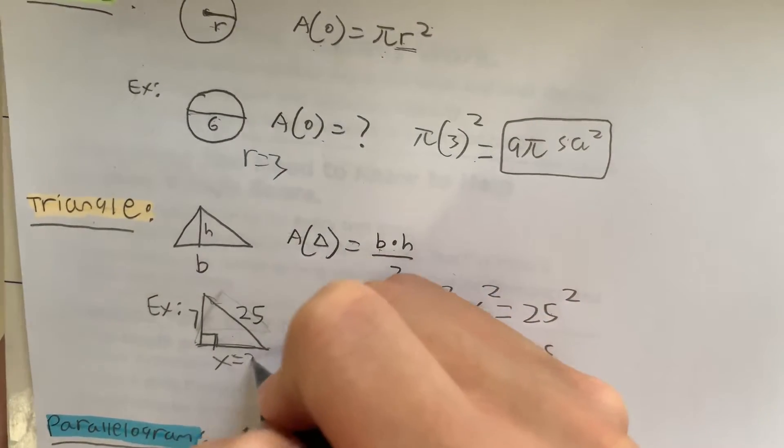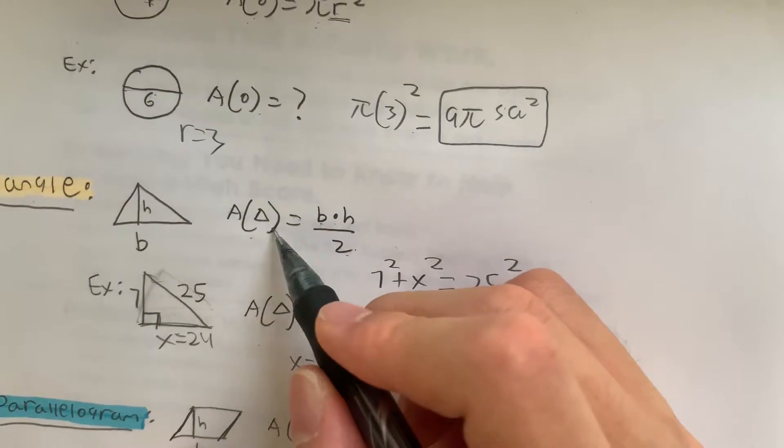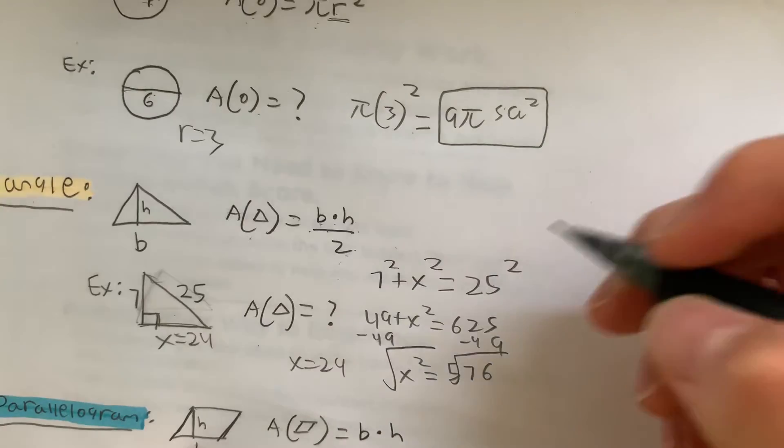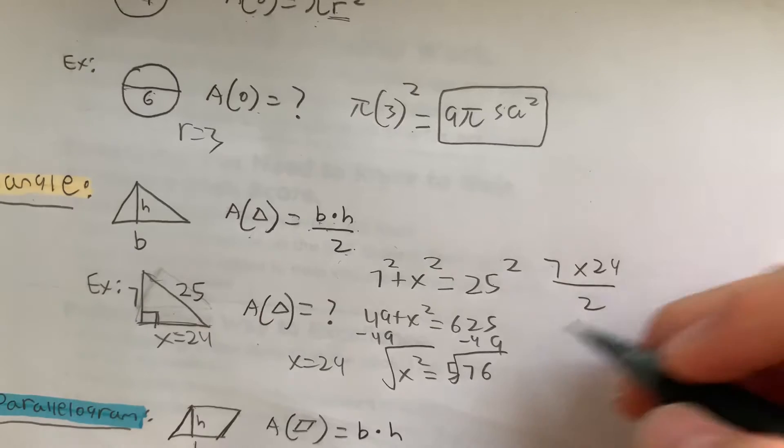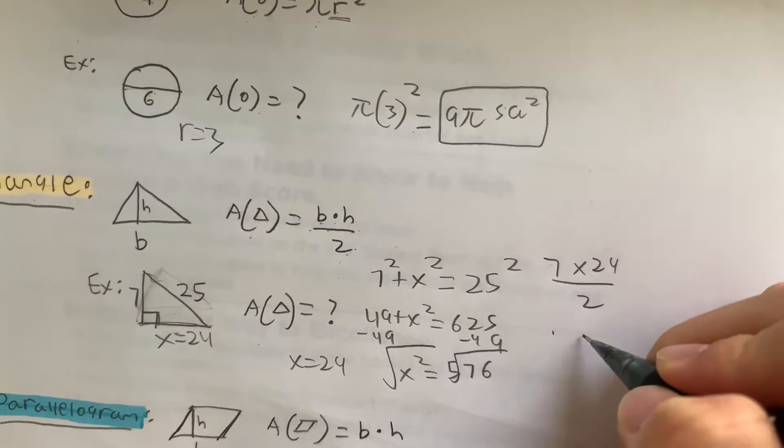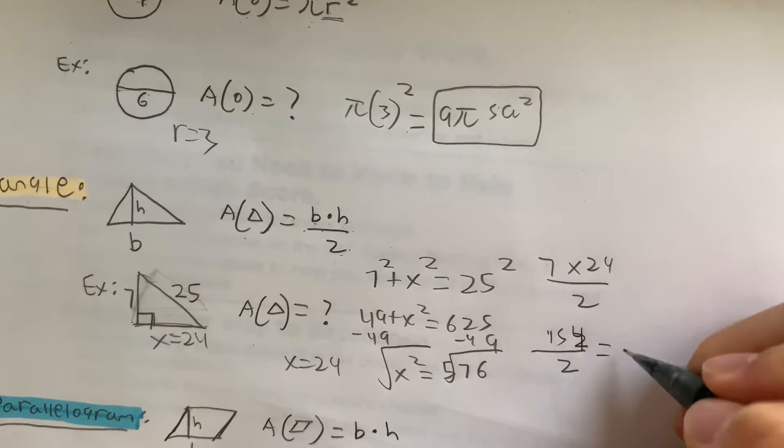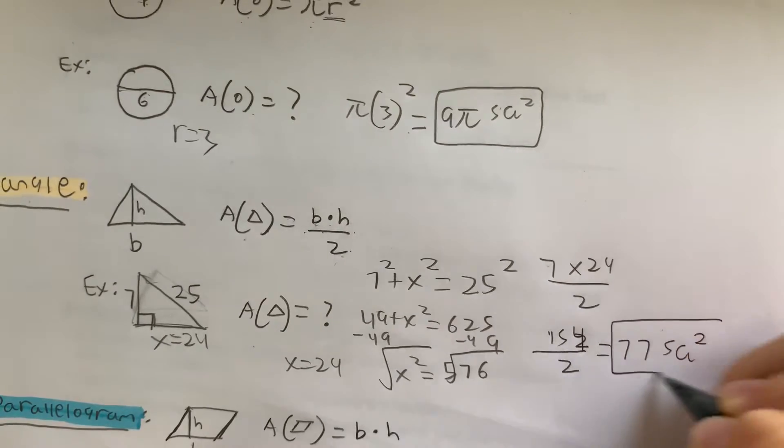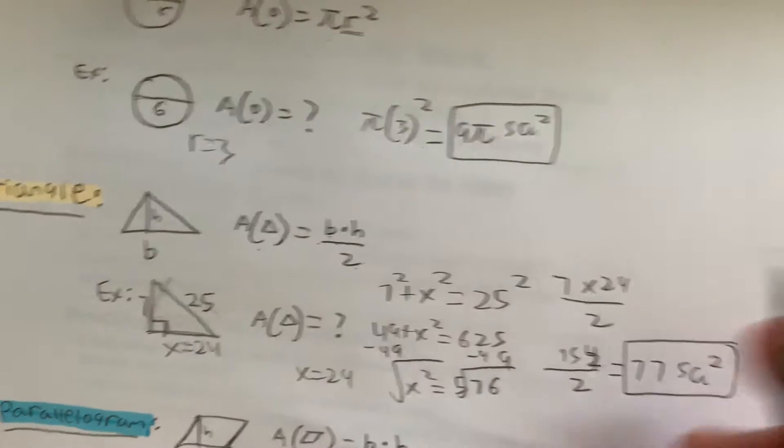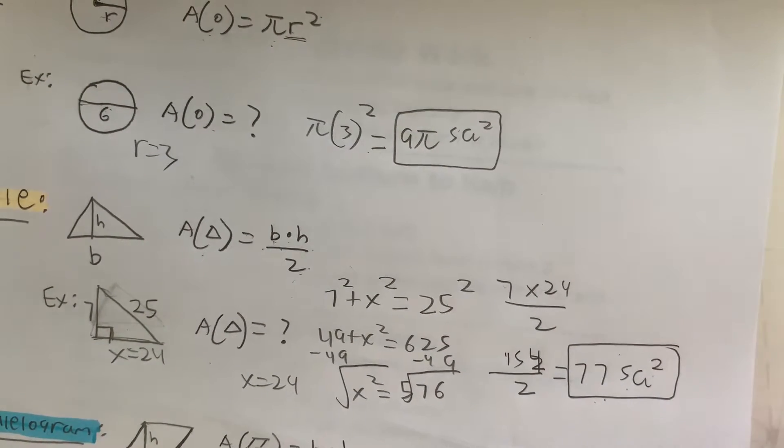Now let's plug it back into the equation. The area of a triangle is base times height divided by 2. So that equals 7 times 24 divided by 2. What is that equal to? That equals 154 over 2, which equals 77 square units. So the area of this right triangle is 77 square units.